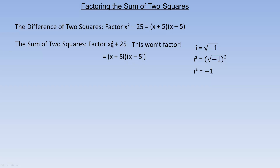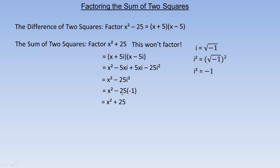We could actually factor x squared plus 25 into x plus 5i and x minus 5i. As a check: x times x is x squared, x times negative 5i is negative 5xi, 5i times x is 5xi, and 5i times negative 5i is negative 25i squared. These two middle terms are opposites, so they add to zero, leaving x squared minus 25i squared. Since i squared is negative 1, we substitute negative 1 and get x squared plus 25.